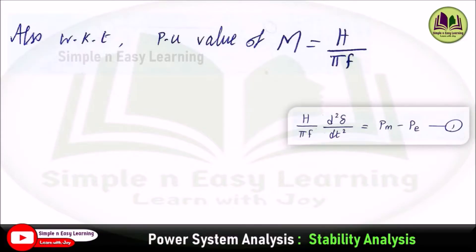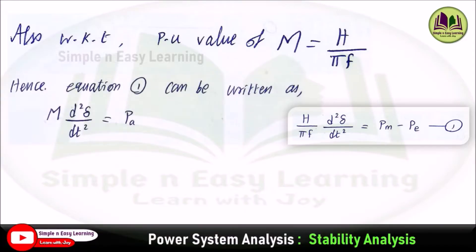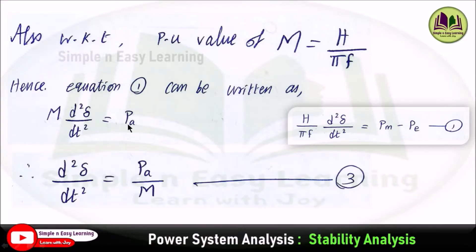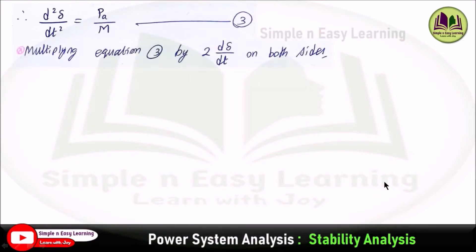We know that the per-unit value of M equals H / πf. So instead of H / πf in the swing equation, substitute M. Hence, equation 1 can be rewritten as M · d²δ/dt² = Pa. Therefore d²δ/dt² = Pa / M, and this is the third equation.